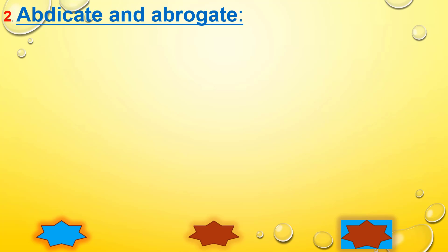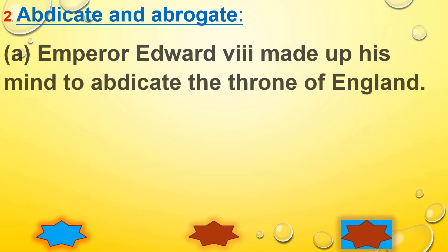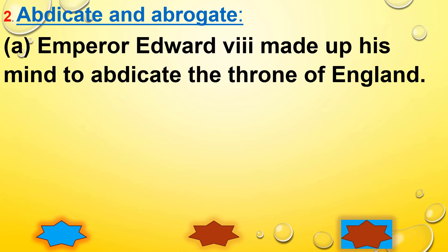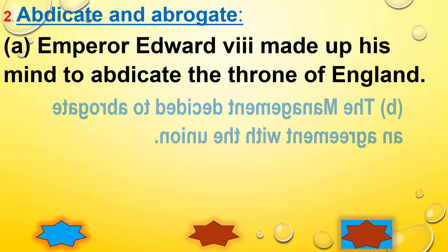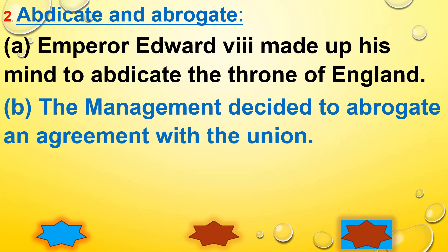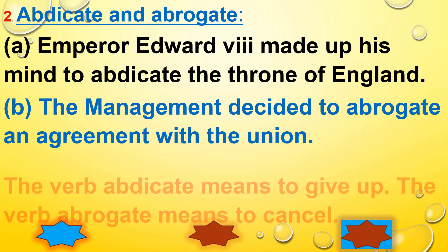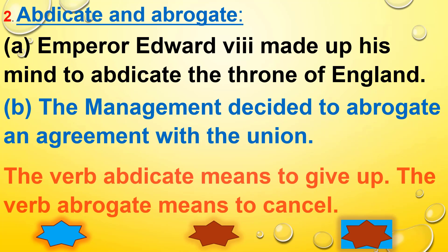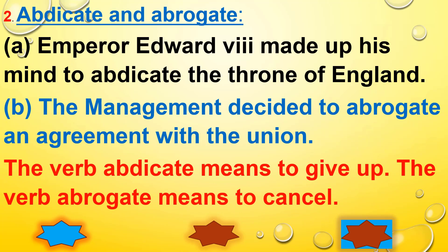Number 2: Abdicate and Abrogate. Emperor Edward VIII made up his mind to abdicate the throne of England. The management decided to abrogate an agreement with the union. The verb abdicate means to give up. The verb abrogate means to cancel.